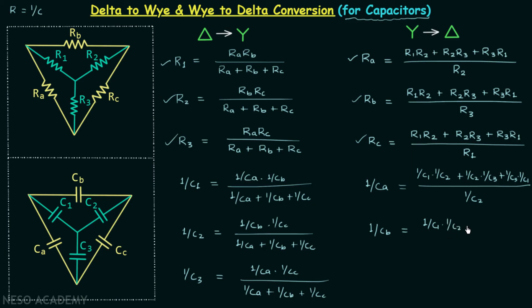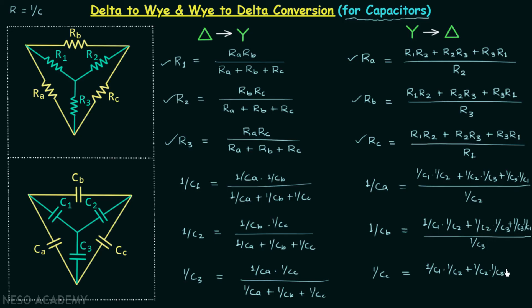Following the same process, 1 over CB equal to (1 over C1 multiplied by 1 over C2, plus 1 over C2 multiplied by 1 over C3, plus 1 over C3 multiplied by 1 over C1) divided by 1 over C3. And for CC: 1 over CC equal to the same numerator divided by 1 over C1. Now we have the formulas to perform the conversion of delta to Y and Y to delta networks when we have capacitors.